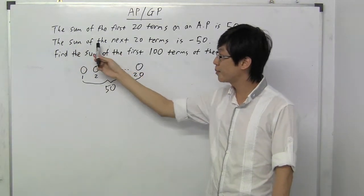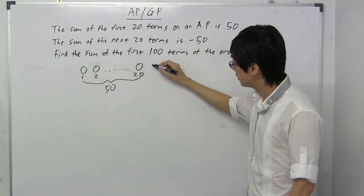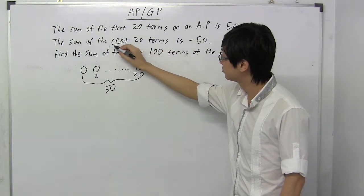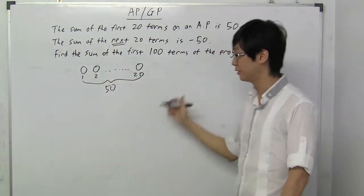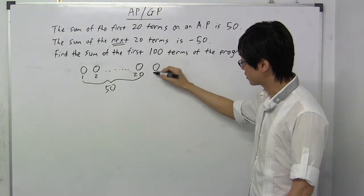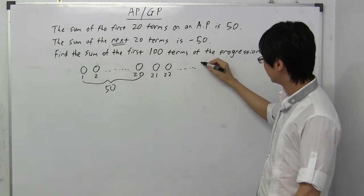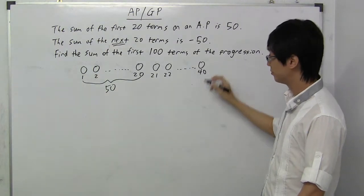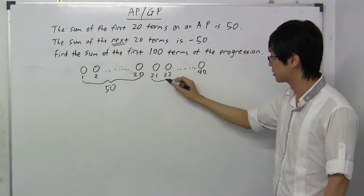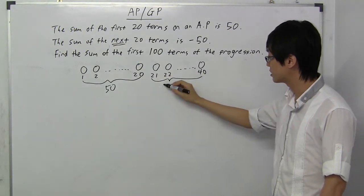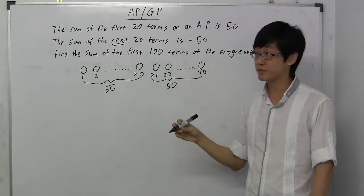Followed by, the sum of the next 20 terms is minus 50. And so what this statement is trying to say, the key word is next, that means the next 20 terms after the 20 terms in front. So we have the 21st term, 22nd, all the way until the 40th term. That means the question is saying that summing from 21st to the 40th term is minus 50. That's what the statement is trying to say.